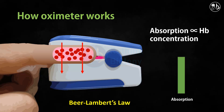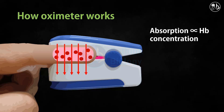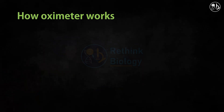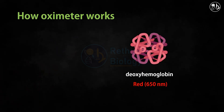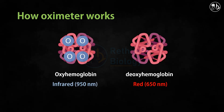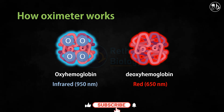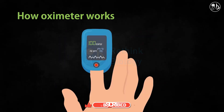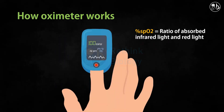When there is high concentration of hemoglobin in the blood, the absorption of light will be higher compared to low concentration. The oximeter has two types of light emitting diodes: deoxy hemoglobin, or unsaturated hemoglobin, absorbs red light mostly, whereas oxy hemoglobin, or saturated hemoglobin, absorbs infrared light. The SpO2 reading shown on the monitor is the ratio of absorbed infrared light to red light.